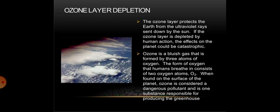Now comes ozone layer depletion. The ozone layer protects the Earth from the ultraviolet rays sent down by the Sun. If the ozone layer is depleted by human action, the effects on the planet could be catastrophic. Ozone is a bluish gas that is formed by three atoms of oxygen. When found on the surface of the planet, ozone is considered a dangerous pollutant and is one substance responsible for producing the greenhouse effect.